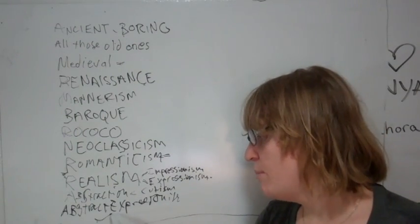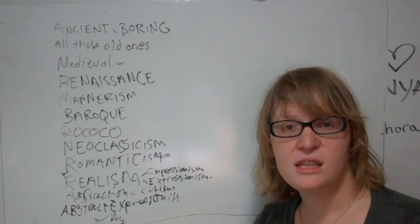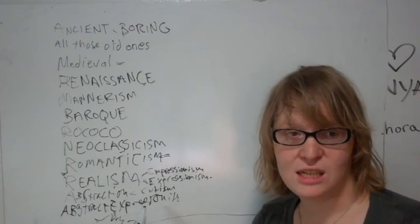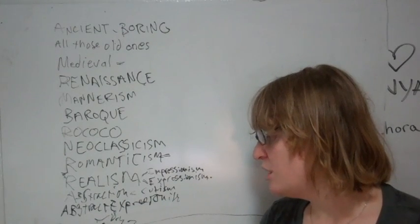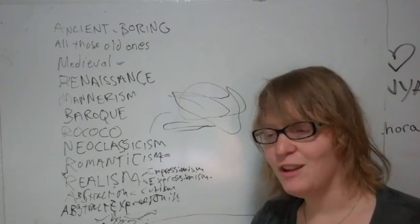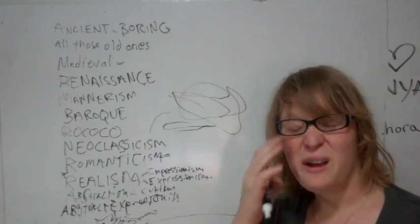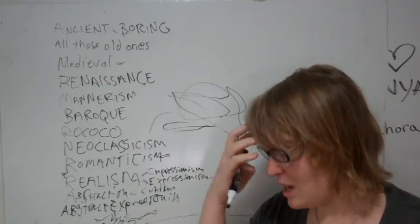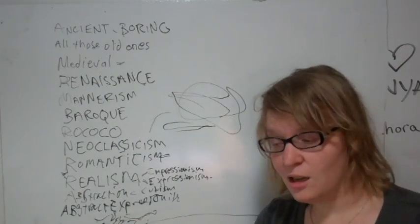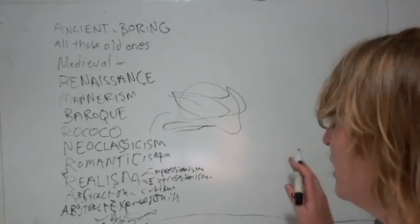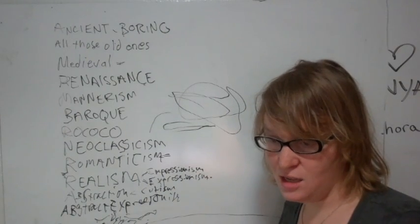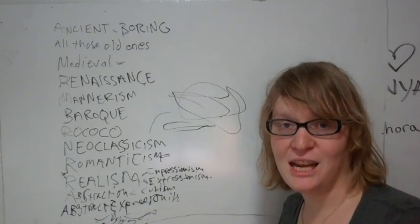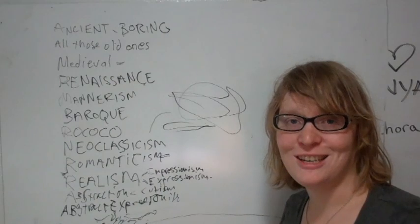Then we get into pop art, minimalism which was in like the 70s, 60s kind of 70s and 80s. And then we've got postmodern art which is what we have now. Even if it doesn't necessarily make an art object or even if it's not a clearly delineated performance, it's an art piece.